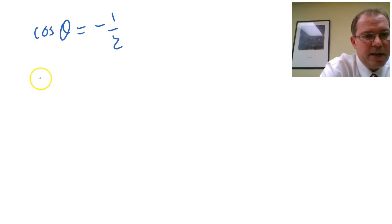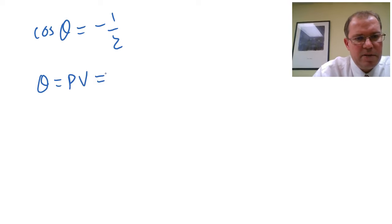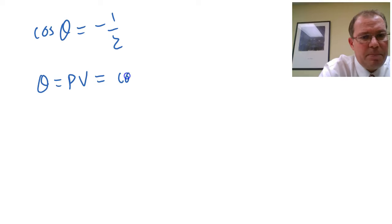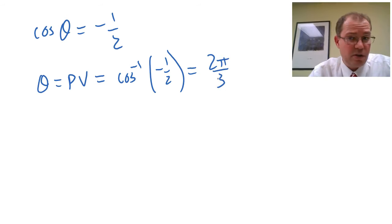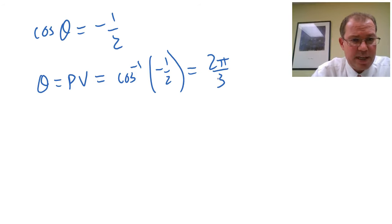So let's first find one answer, which I'm going to call the principal value, just one answer for theta. And we're going to do that by taking the cosine inverse of both sides, so cosine inverse of minus a half. If you use your calculator, it's two pi over three, or you can think about it using special triangles and which quadrant you're in.